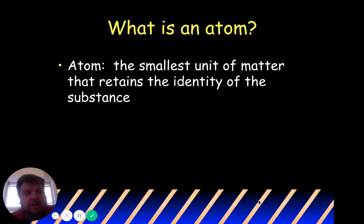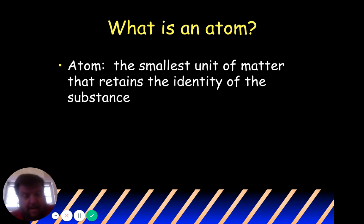The atom is the smallest unit of matter that retains the identity of the substance. For example, one atom of gold is the same as another atom of gold — it's the smallest unit of matter that retains the identity of that substance. But an atom of gold is not the same as an atom of silver.